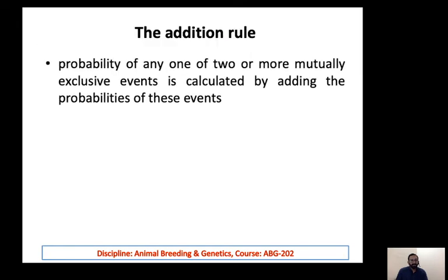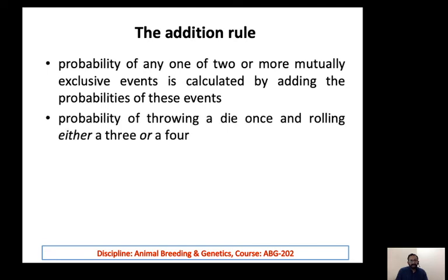Another rule is the addition rule: the probability of any one of two or more mutually exclusive events is calculated by adding their probabilities. The key concept here is 'mutually exclusive' — the occurrence of one event excludes the possibility of the other. For example, throwing a die once and rolling either a three or a four are mutually exclusive, because if you get three, you cannot get four, and vice versa.